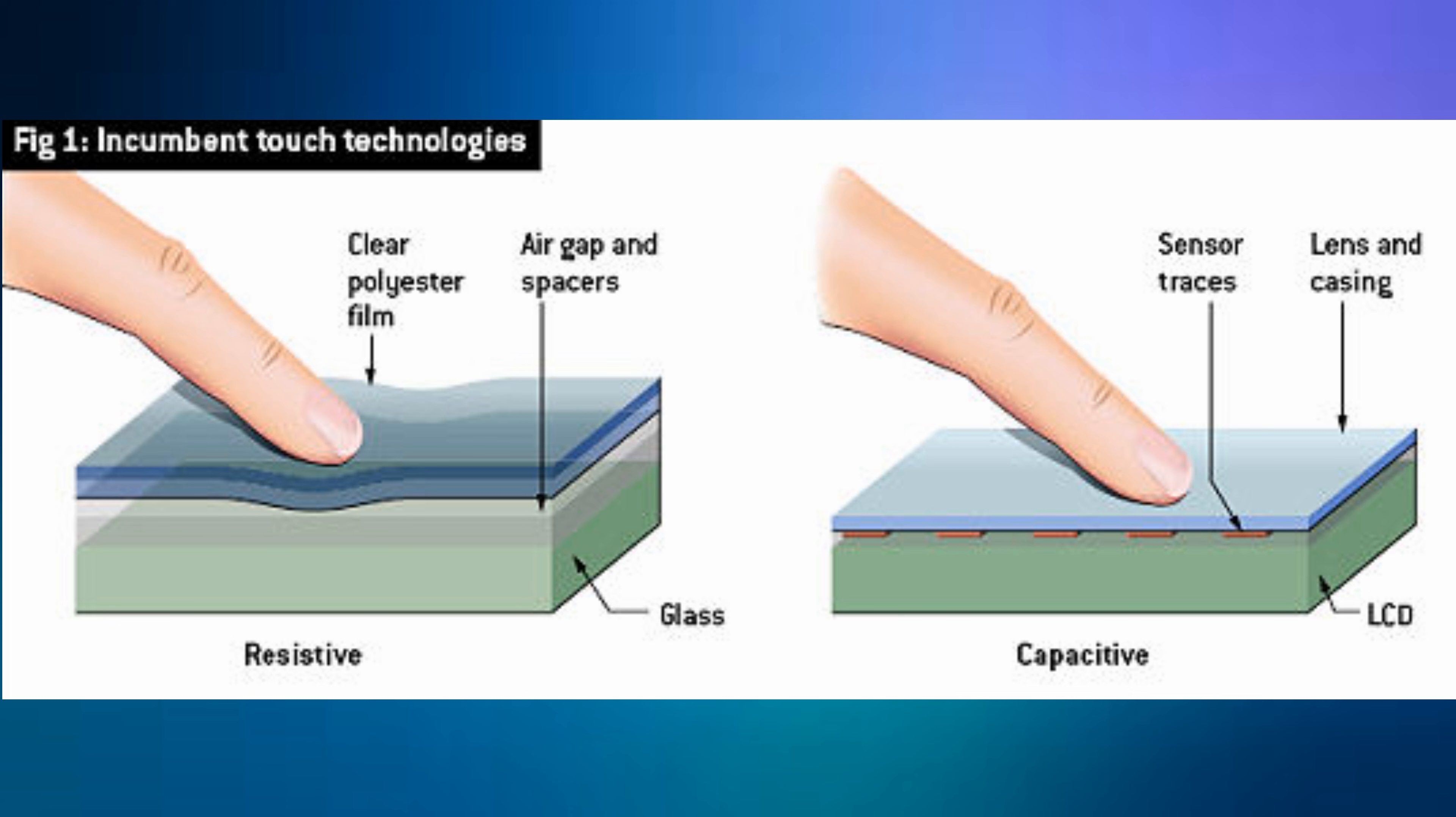And now for the capacitive touchscreen. This works by using the conductive properties of an object, usually the skin on your finger. These are usually made of glass and do not rely on pressure.